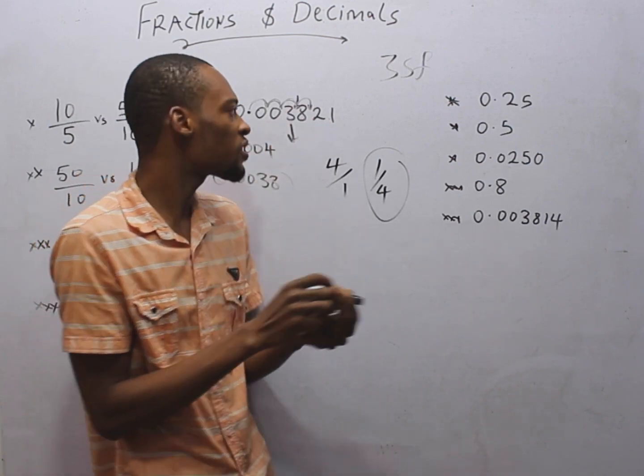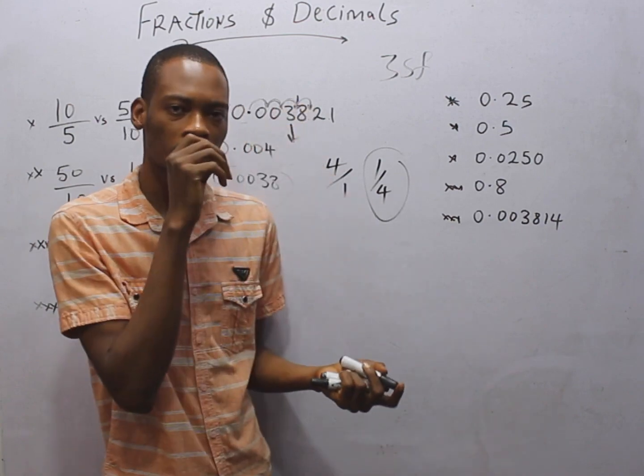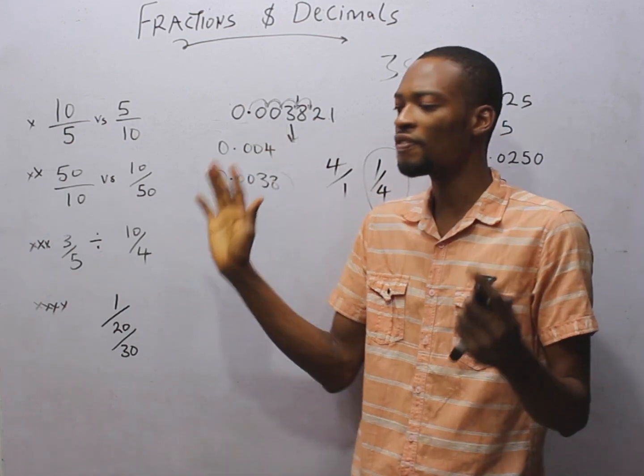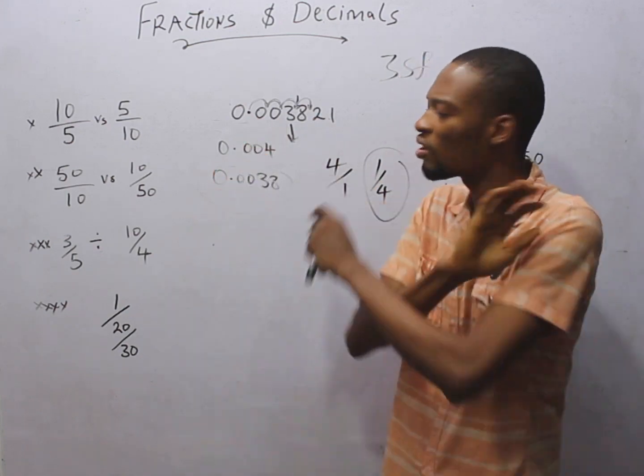So 3 is the first significant figure. The second significant figure is every number after the first significant figure, whether 0 or not 0.